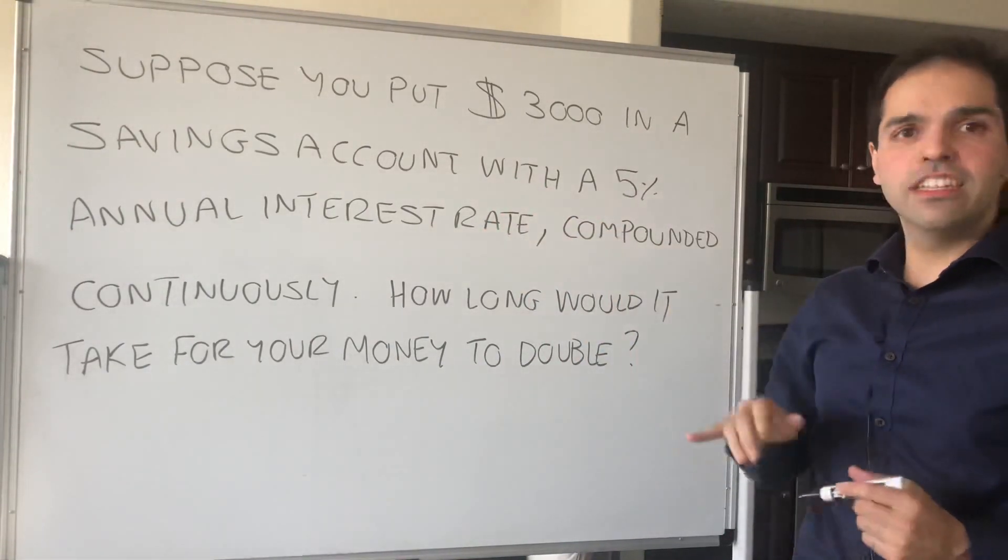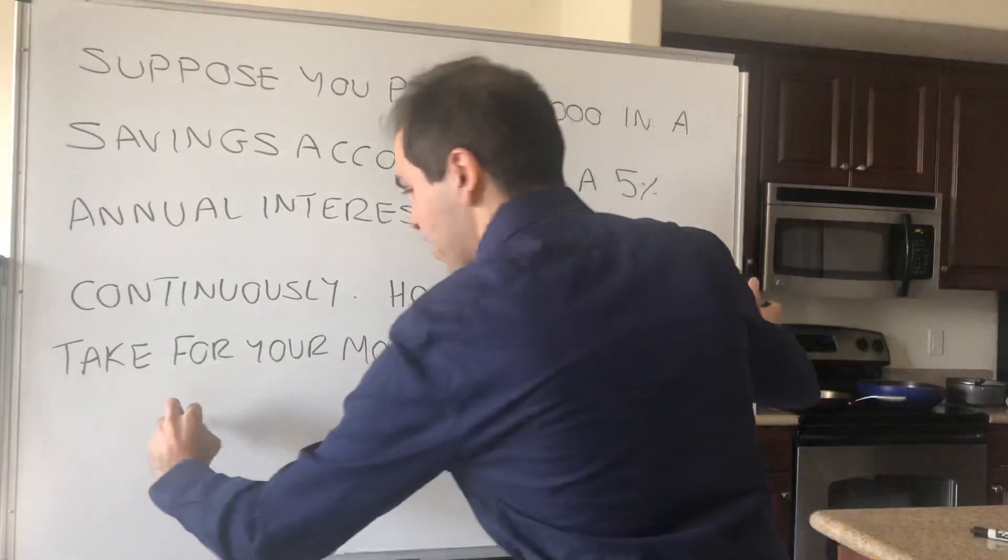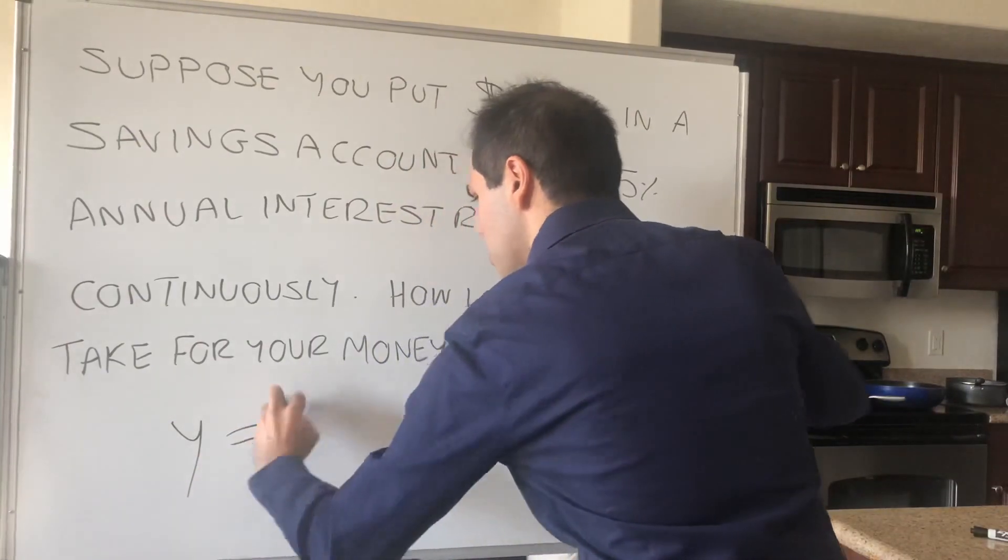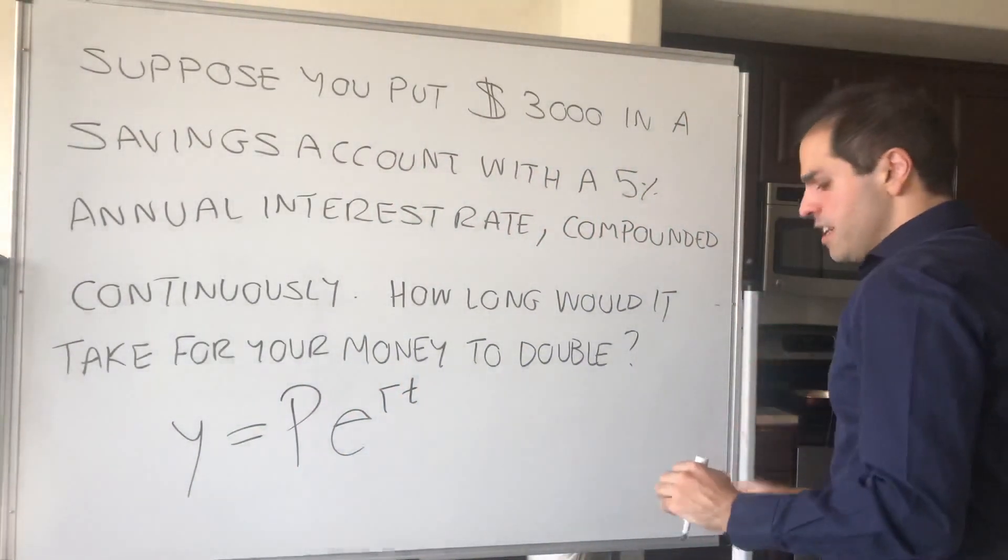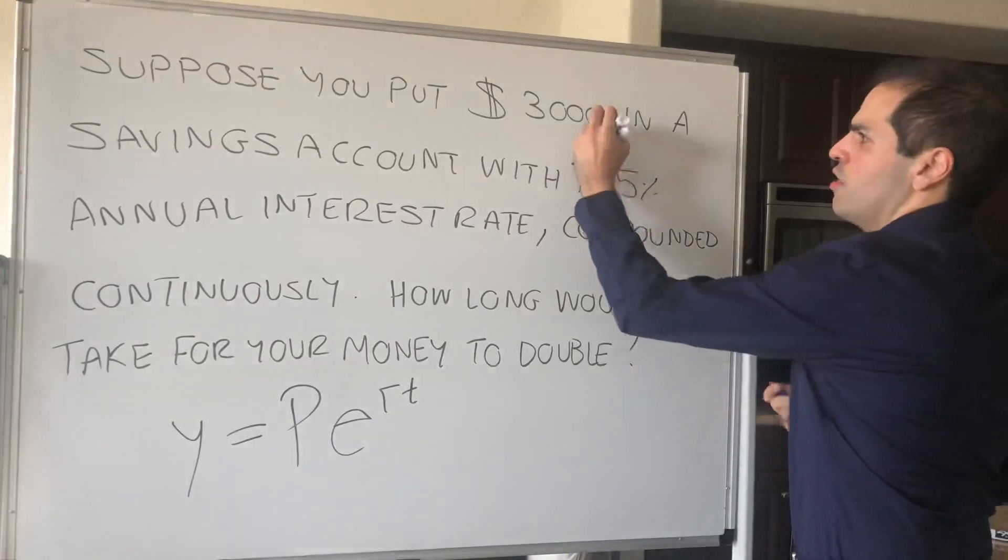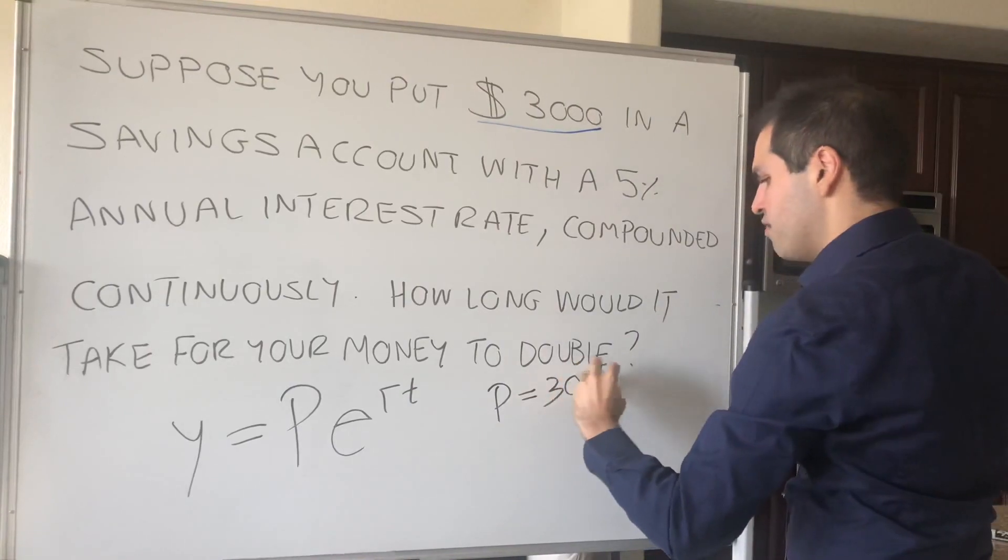Because we're compounding this continuously, we have to use the celebrated PERT formula, namely Y equals PE to the RT, where P is the initial amount of money, so $3,000.